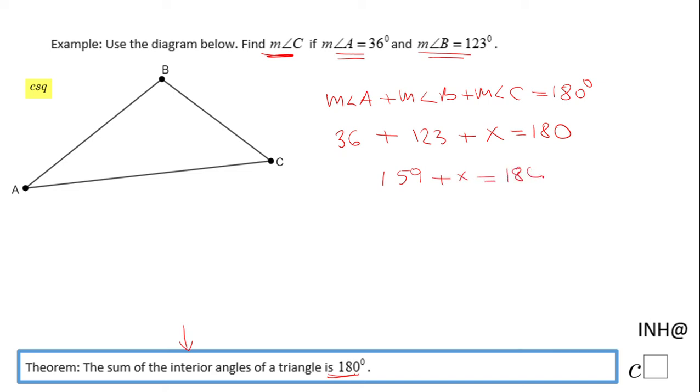The last thing for finding X in this equation is to subtract 159 on both sides, and we have 21 here. X is 21.